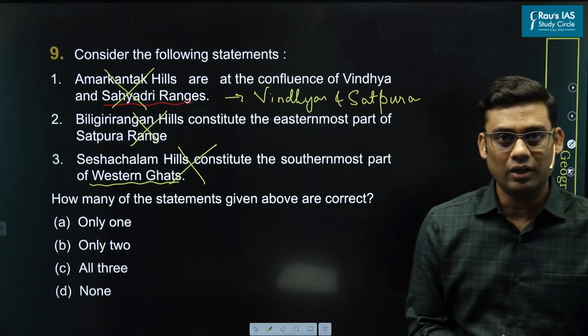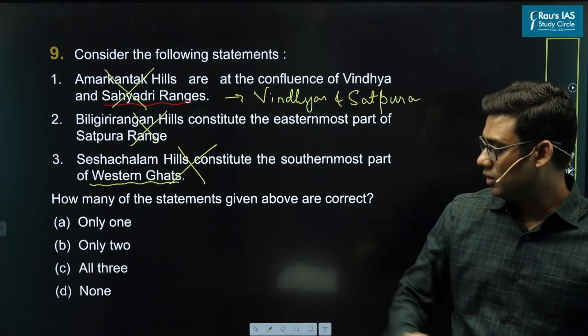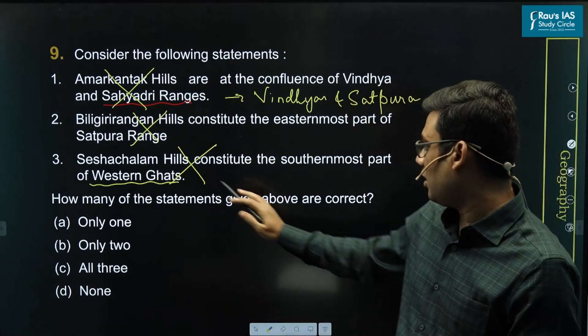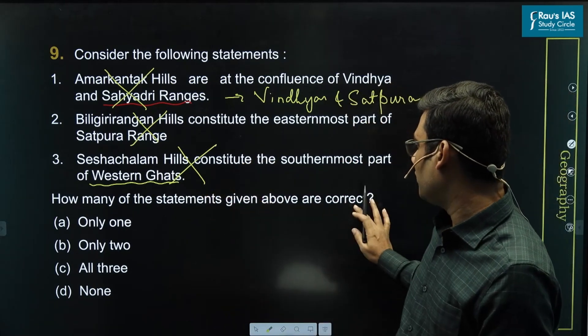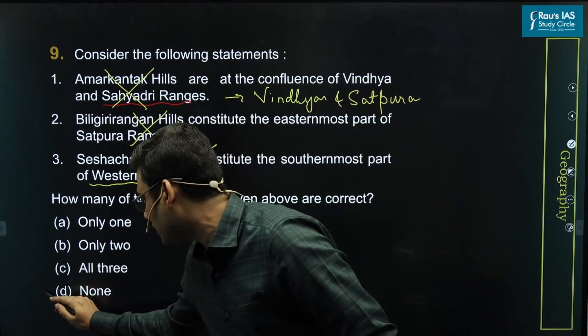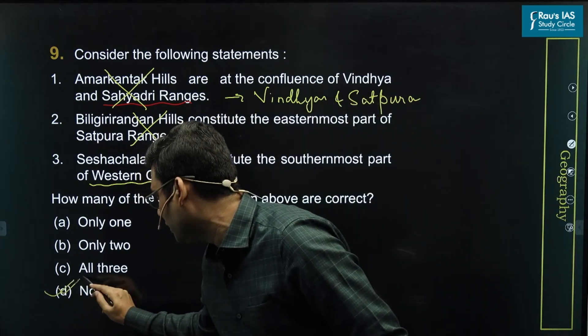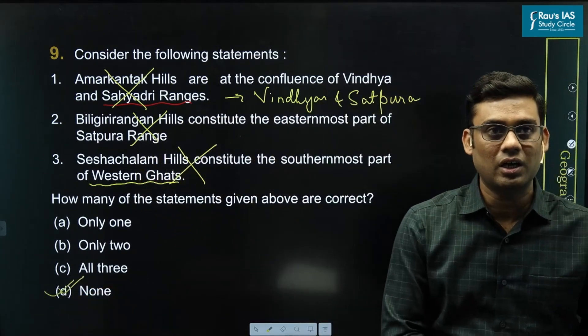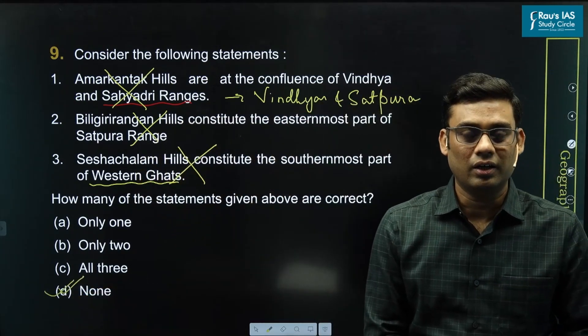So in this case, the answer to 'how many statements given above are correct' is none — all three statements are incorrect.